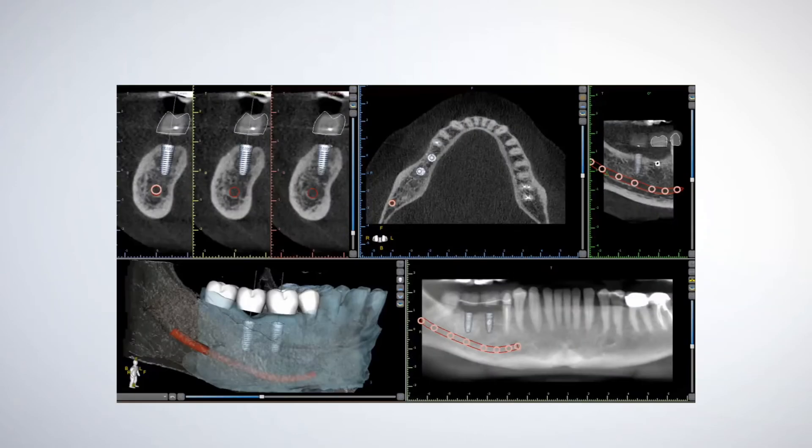Creating a vacuum formed GRS surgical guide over 3D printed model utilizes the precision and accuracy of 3D implant planning software. Using 3D implant planning software, a virtual anatomic model is created with the desired angle, orientation, and depth of one or more implants.